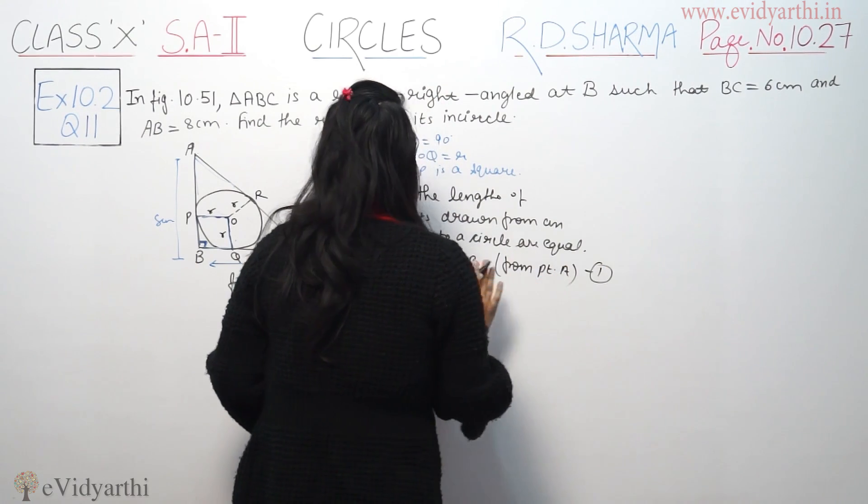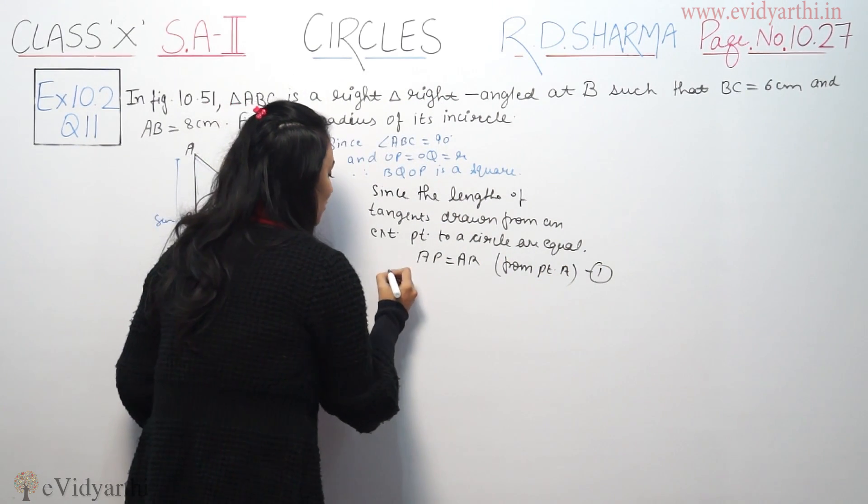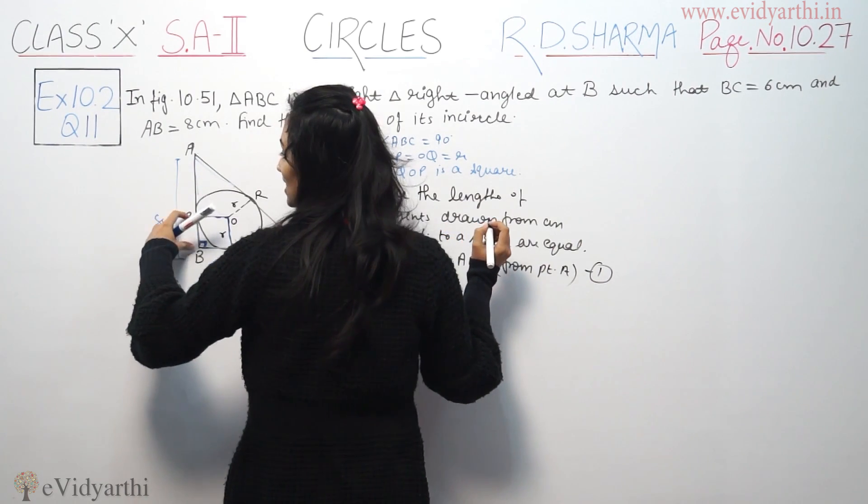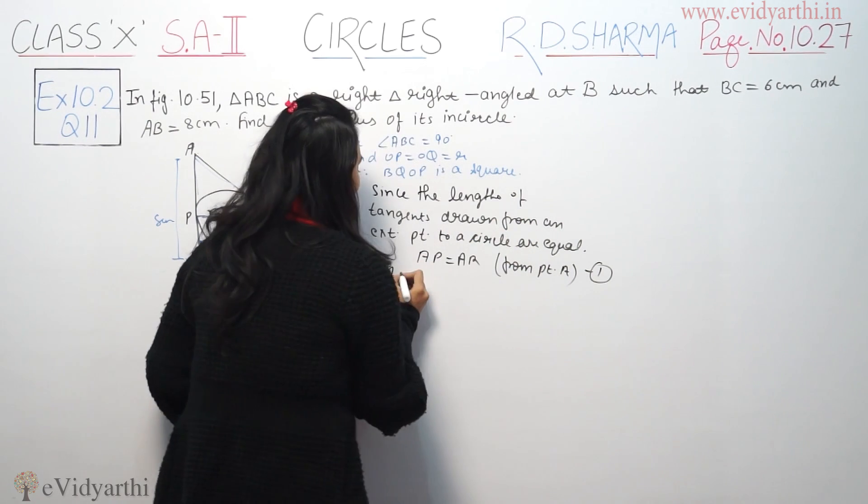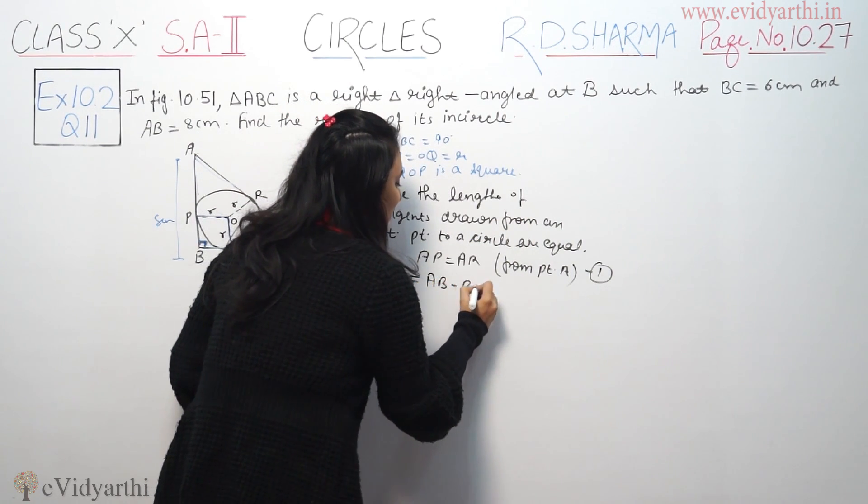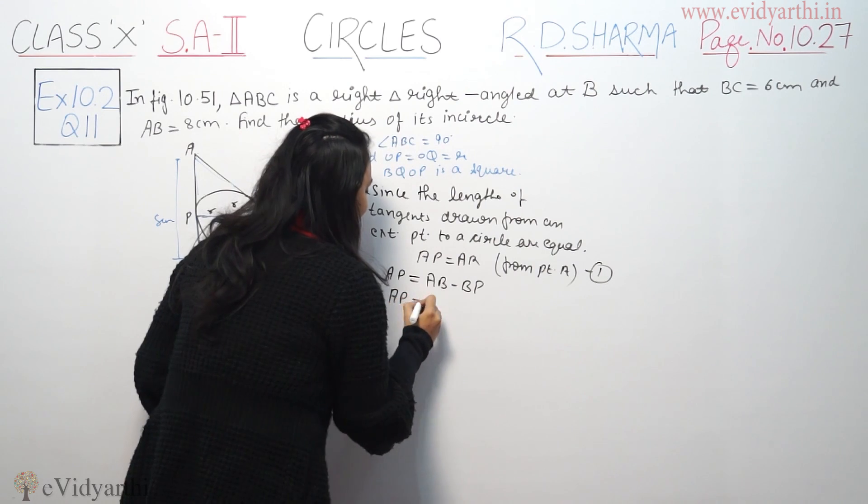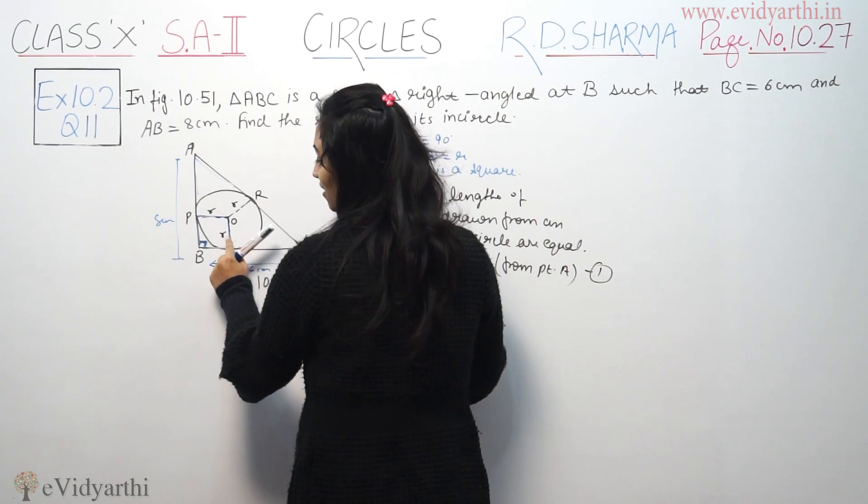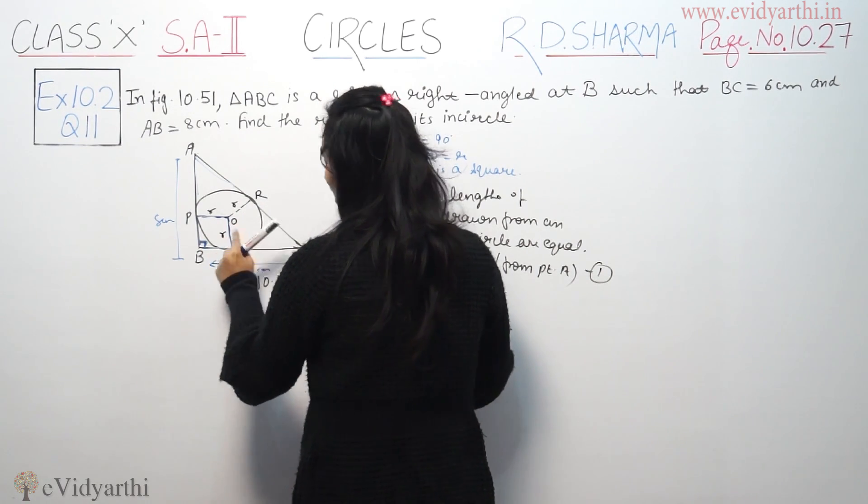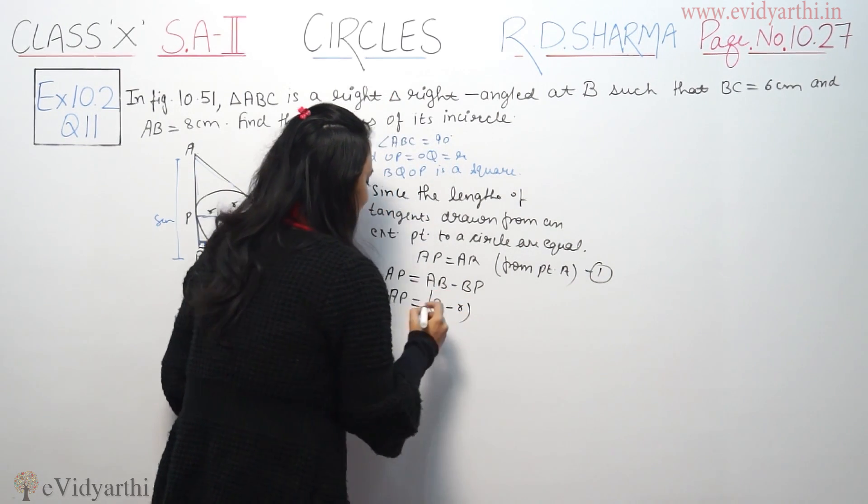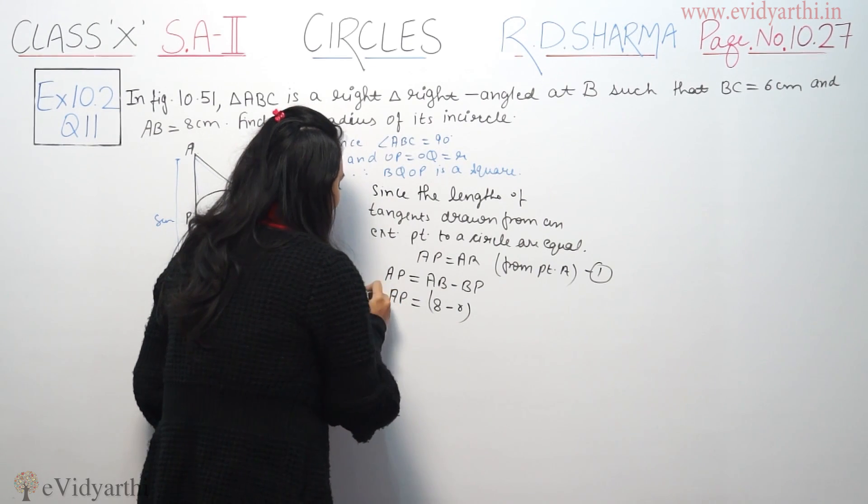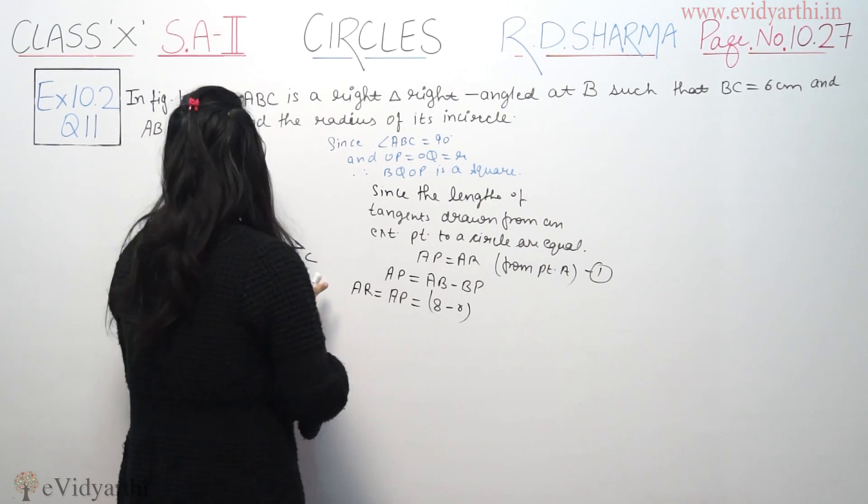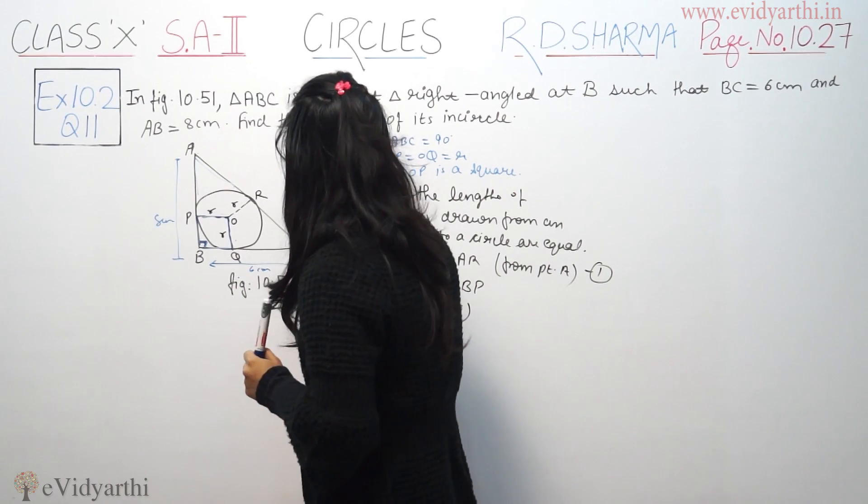First equation: AP is equal to AR. I will draw it. AP is AB minus BP. That means AP equal to AB, which we have given in question as 8. BP, we have a radius because OP equal to radius r. So AP equal to 8 minus r.